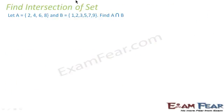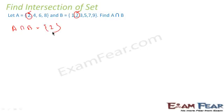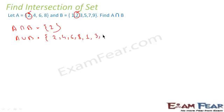Let's do one more example. To find the intersection, we look for common elements: Is 2 in set A? Yes. Is 2 in set B? Yes. Is 4 in set B? No. Is 6 in set B? No. Is 8 in set B? No. So 2 is the only common element, meaning A intersection B = {2}. For A union B, we write all elements of A and then add elements of B not already listed: the result includes 1, 3, 5, 7, 9 in addition to A's elements.